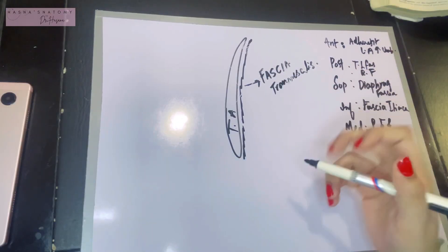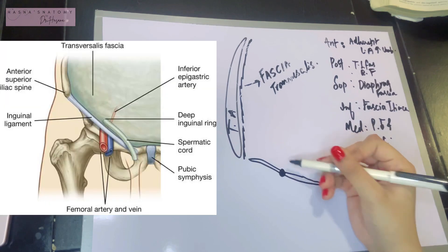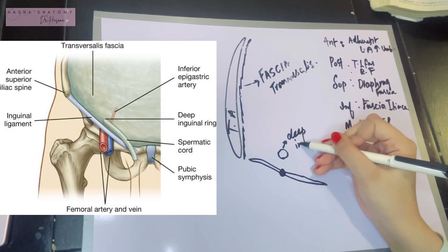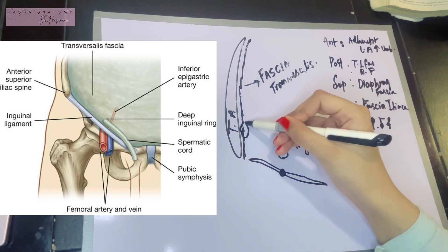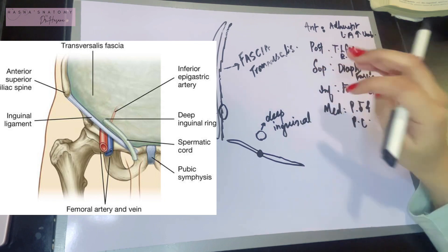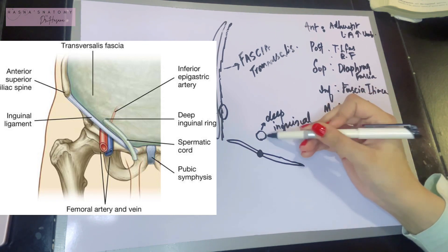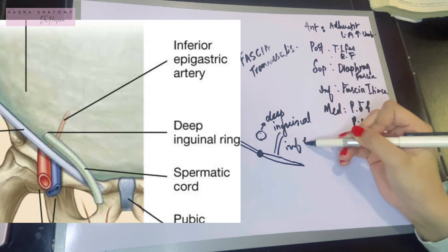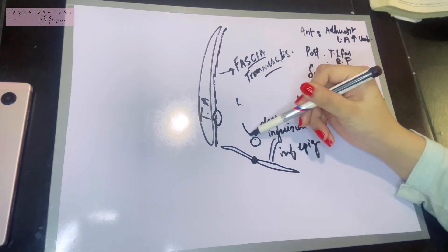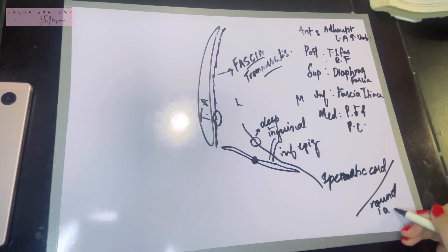An important modification in the fascia transversalis is the deep inguinal ring, which is an opening located 1.2 centimeters above the mid-inguinal point, lying lateral to the inferior epigastric artery. The superficial inguinal ring is an opening in the external oblique aponeurosis, whereas the deep inguinal ring is an opening in the fascia transversalis. The inguinal canal runs from the deep inguinal ring to the superficial inguinal ring, moving from deep to superficial and lateral to medial. In males, the spermatic cord passes through it; in females, the round ligament of the uterus.